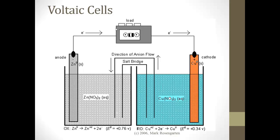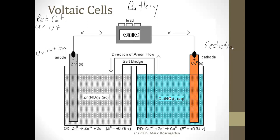Let's take a look at what that actually means. Here's a voltaic cell — basically, it's a battery, and all batteries work on these general principles. On this side we have the anode, which is zinc. Red Cat and An Ox — so oxidation takes place here. Here's the cathode, so reduction takes place here. Since oxidation is losing electrons, the electrons flow away from the anode. The load is just whatever you've connected your battery to — whether it's your phone or a child's toy — but the electrons flow away from the anode and to the cathode.